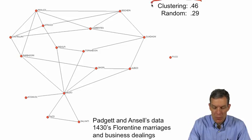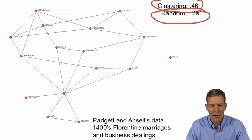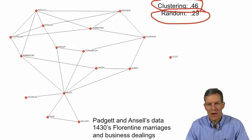So this is Padgett and Ansell's data from the 1430s Florentine marriages and business dealings. Here you get a clustering of about 0.46. At random it would be at about 0.29. So that's another situation where we've got substantially higher clustering than at random.